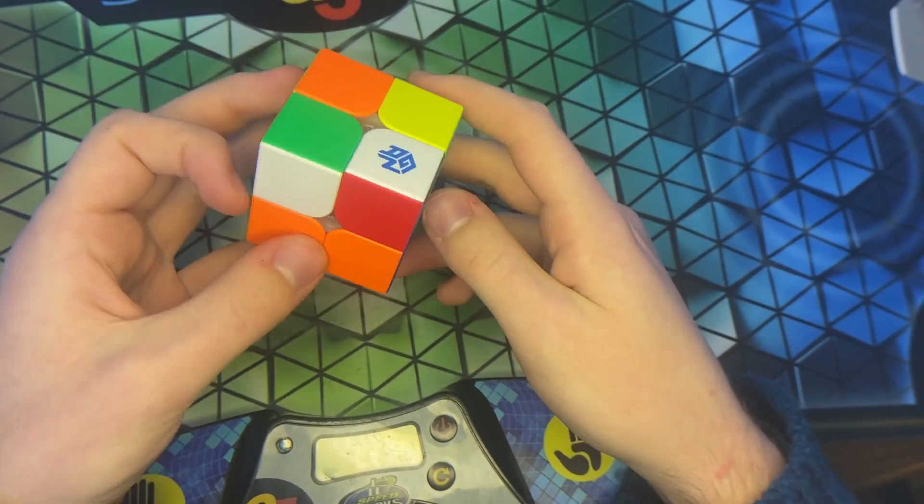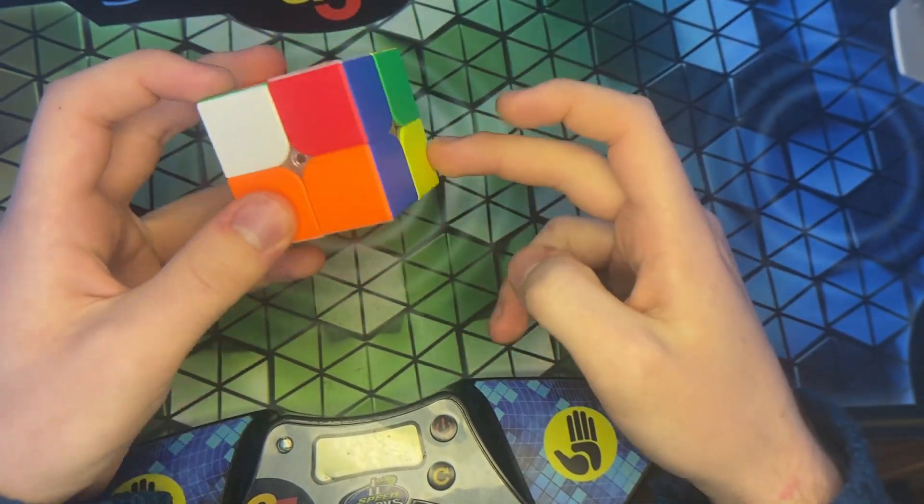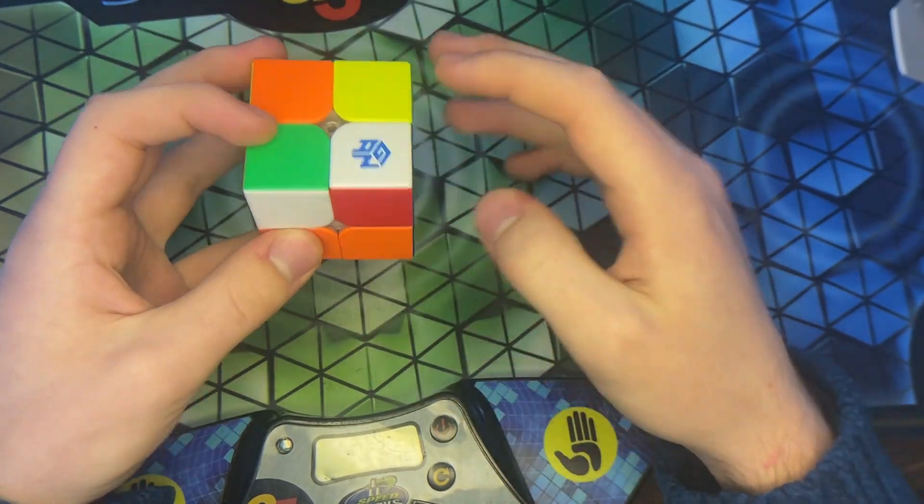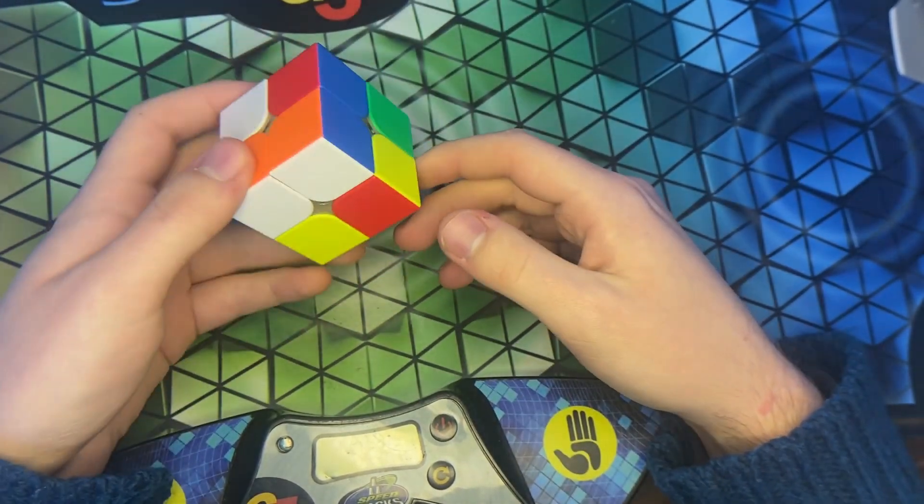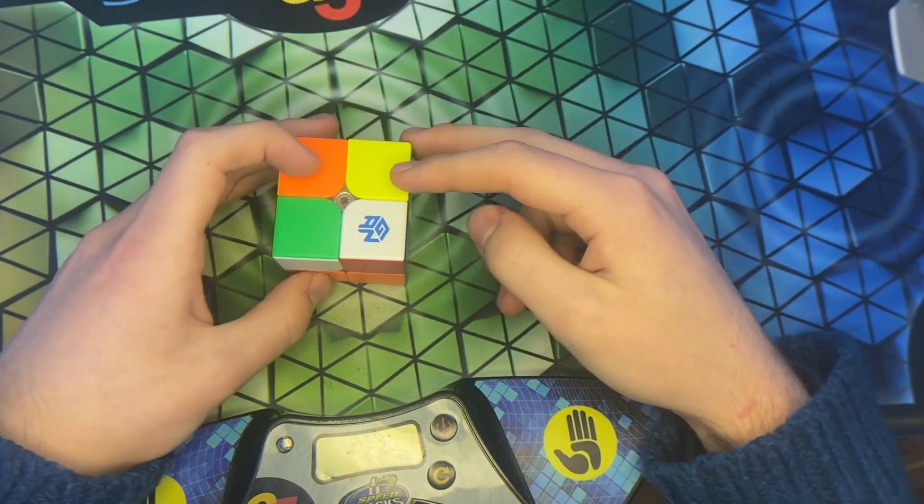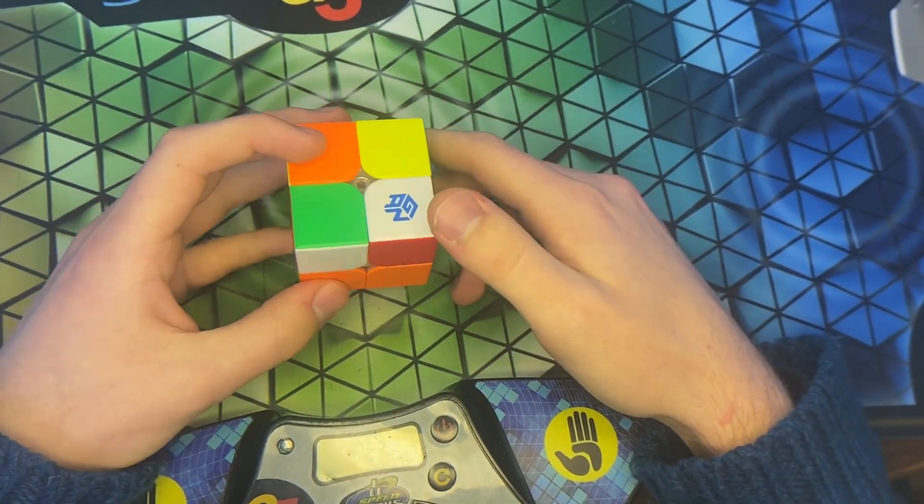So, this case is the 3 bad corners case. So, 1, 2, 3 on this UD axis. And, this case is, well, there are two 3 bad corner cases, but this one is the good one.